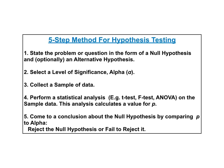The five-step method for hypothesis testing. Step one: state the problem or question in the form of a null hypothesis and, optionally, an alternative hypothesis. Step two: select a level of significance, alpha. Step three: collect a sample of data. Step four: perform a statistical analysis — for example, a t-test, f-test, or ANOVA — on the sample data; this analysis calculates a value for p. Step five: come to a conclusion about the null hypothesis by comparing p to alpha, and reject the null hypothesis or fail to reject it.